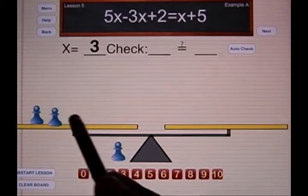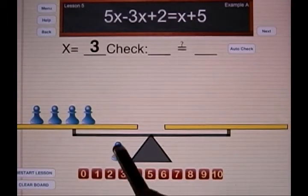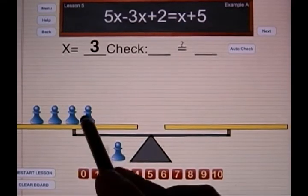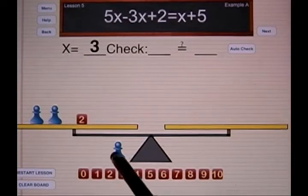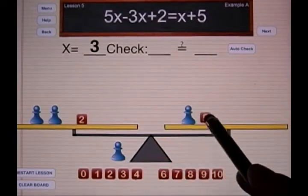One x, two x, three x, four x, five x. I take away three x's, and I add a cube with the number two. On the right side I have x plus five.